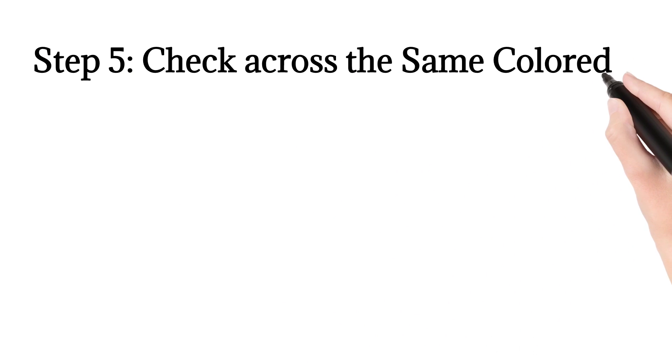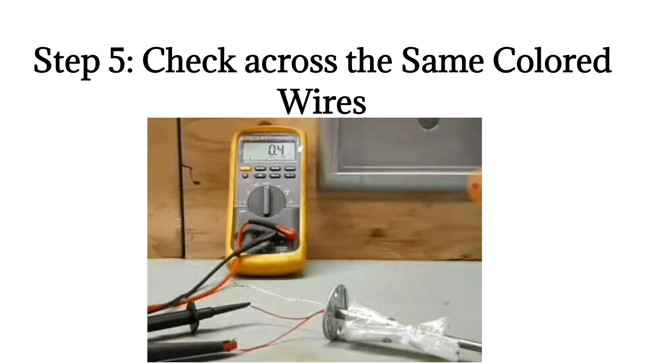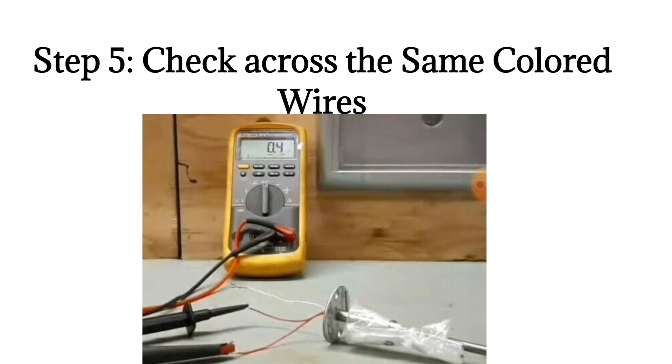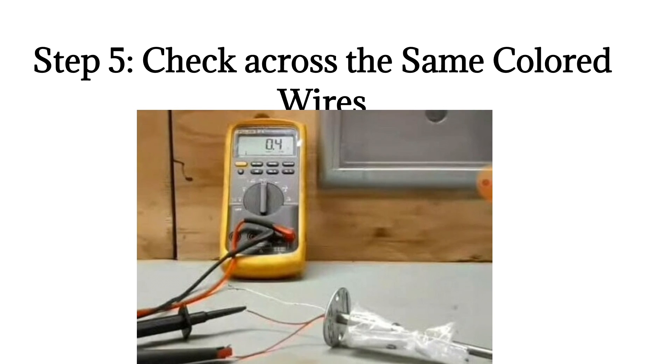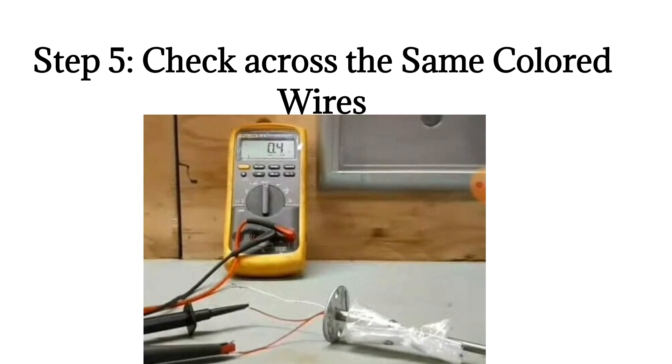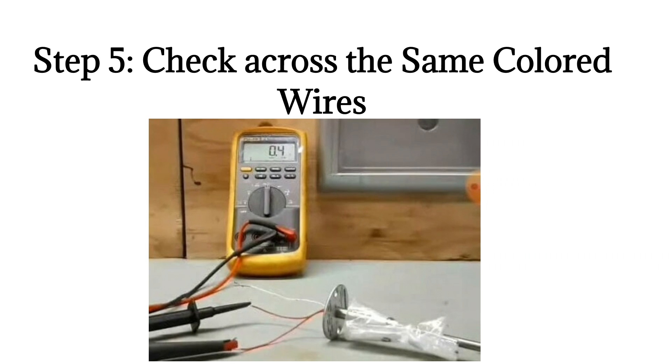Step 5. Check across the same colored wires. Now check across the same colored wires. With the white now excluded, the reading should show a very low resistance this time. Here, it is showing as 0.4 ohms.